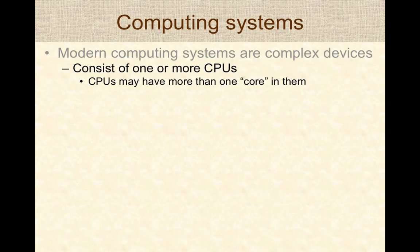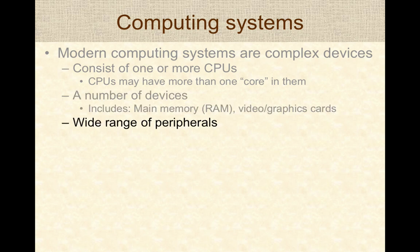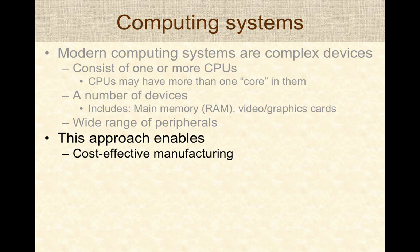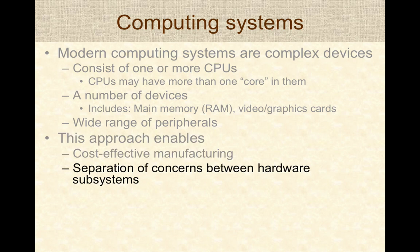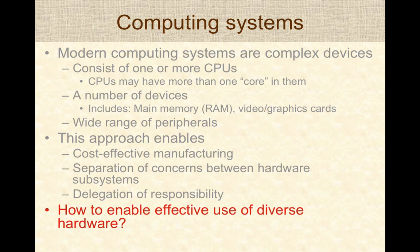Modern computing systems are pretty complex devices. They consist of one or more CPUs, and each CPU can have multiple cores, which are like smaller CPUs within the main CPU. Computing devices have a number of devices connected to them including main memory, video or graphics cards, and a wide range of peripherals like printers and USB devices. The design approach of using a collection of subsystems enables cost-effective manufacturing and separation of concerns, where each subsystem is responsible for a specific task. The real question is how do we enable effective use of these diverse hardware devices?